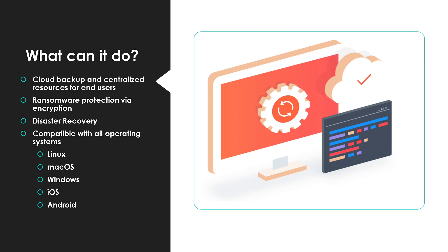There's also ransomware protection with encryption. A network appliance is placed on the client's network, usually in their server room, and it allows you to back up data to a NAS or other secure location — encrypted and constantly monitored. So if your client ever gets hit with ransomware, spyware, or falls for a phishing email, you're not 100% proof but you're pretty good at mitigating risk if you deploy this tool.